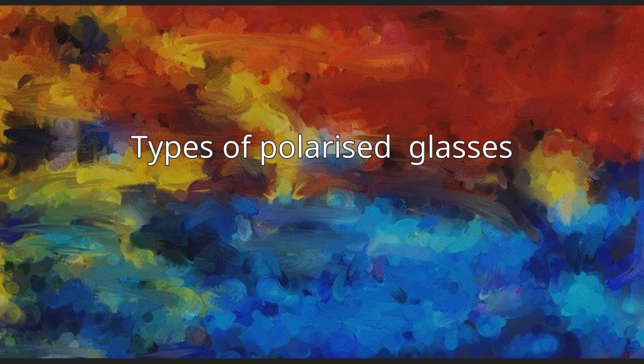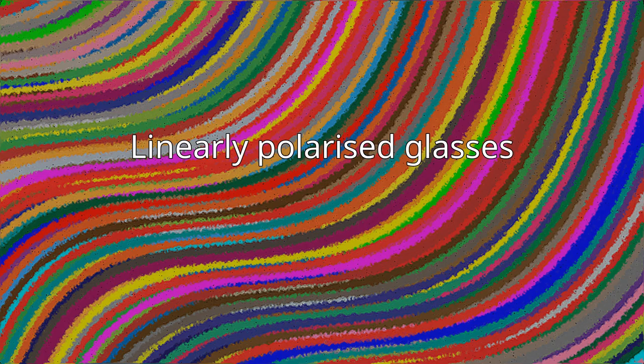Types of Polarized Glasses — Linearly Polarized Glasses. To present a stereoscopic motion picture, two images are projected superimposed onto the same screen. The viewer wears linearly polarized eyeglasses, which contain a pair of orthogonal polarizing filters oriented the same as the projector. As each filter only passes light which is similarly polarized and blocks the orthogonally polarized light, each eye only sees one of the projected images, and the 3D effect is achieved.